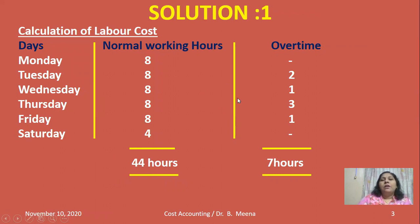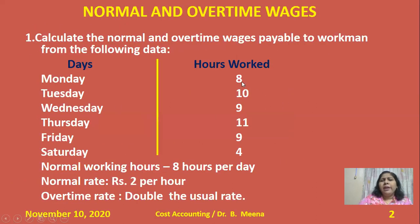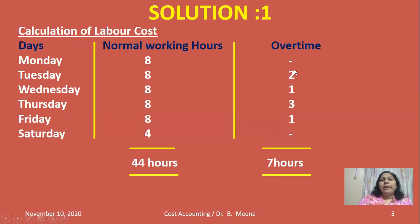Next, I need to calculate overtime wages. For each day, I work out the overtime hours. Monday — 8 hours worked, normal is 8 hours, so no overtime. Tuesday — he worked 10 hours, normal is 8, so 2 hours overtime. Wednesday — 1 hour overtime. Thursday — 3 hours overtime. Friday — 1 hour overtime. Saturday — nil. These are shown in the overtime column.